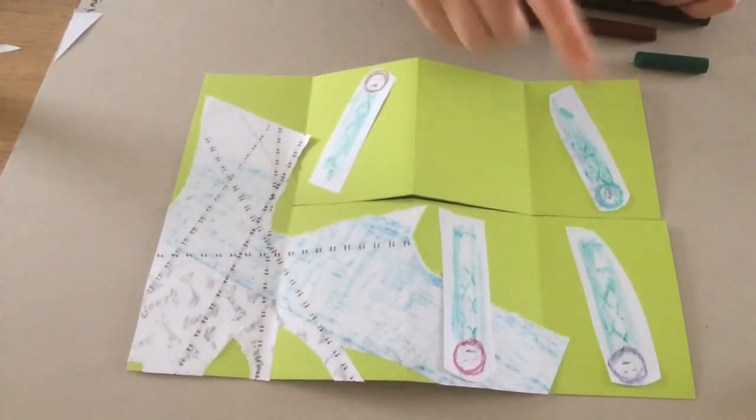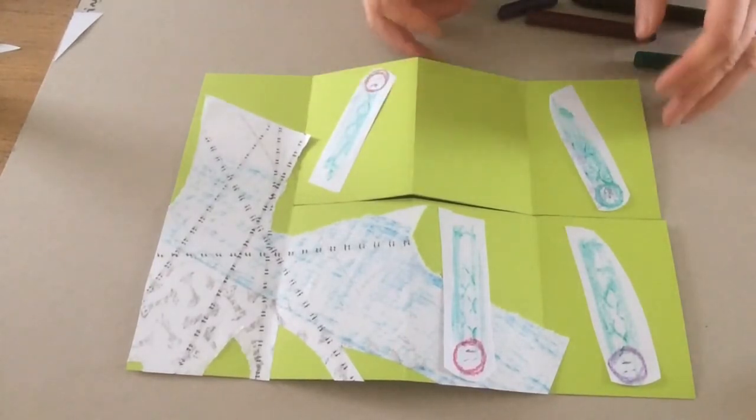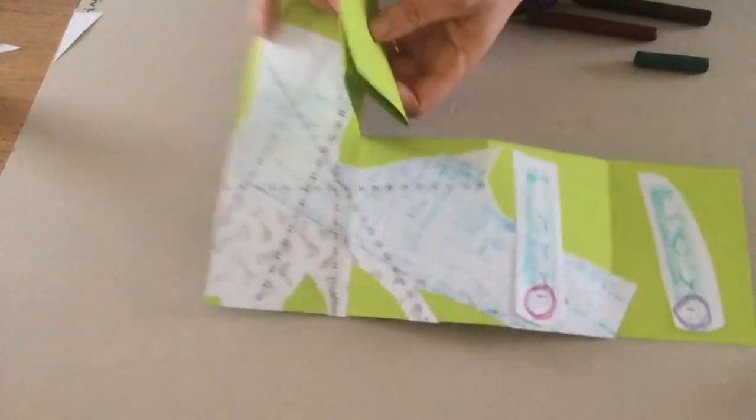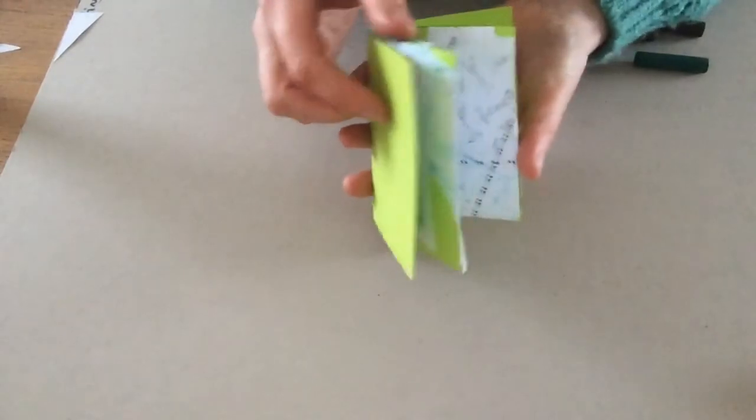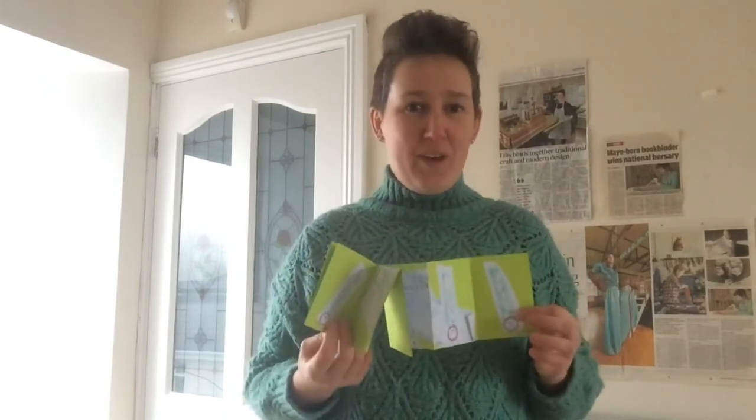Once you're happy with all your people and your animals in your story, you can fold it back up again into book form. And take it out to read whenever you want. So thanks so much for joining me today. I hope you enjoyed making your book. And remember, you can add to this book at any time at all. You can add new people to your book, new creatures, new story line. Whatever you want. It's your book. And also you might want to think about your cover of your book. Maybe you'll have a drawing on the cover. Or maybe you'll add a title to it. Anyway, I hope you had lots of fun making it. And I hope you make many, many more. Thanks.